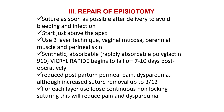Repair of episiotomy should be done as early as possible to prevent infection and bleeding. Suturing starts from the apex — one centimeter above the apex of the wound — using a three-layer technique: first the vaginal mucosa, then the perineal muscles, then the perineal skin. Synthetic absorbable suture materials are used; these typically fall off within 7 to 10 days. If non-absorbable material is used, remove the stitches within 12 days.